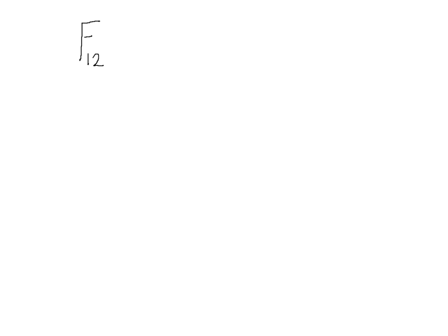We can write that in equation form very easily. We'll write it like this: F12, which stands for the force that object one is exerting on object two, equals negative F21.